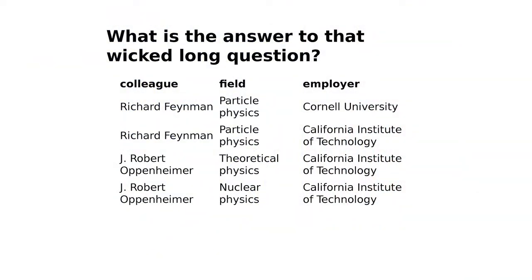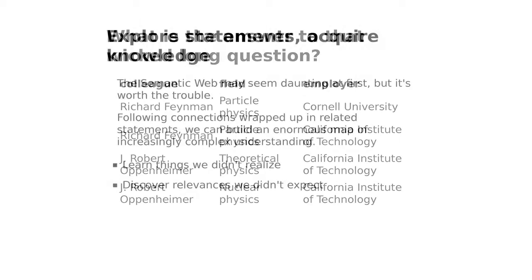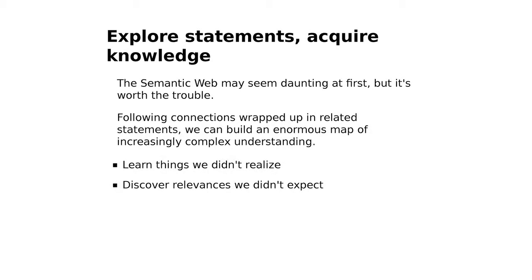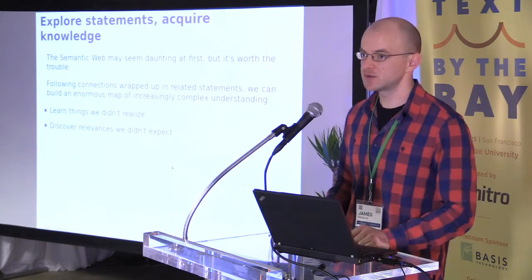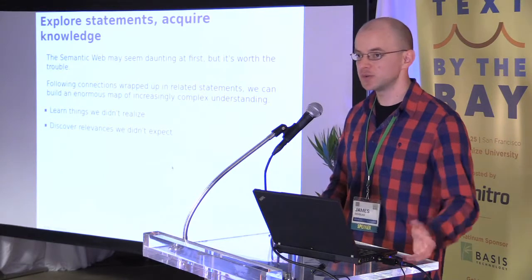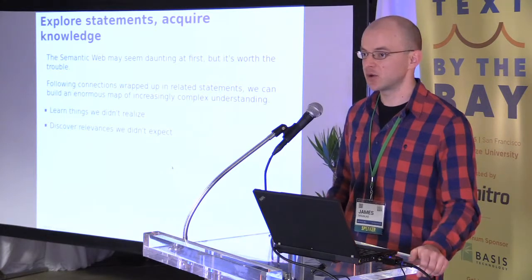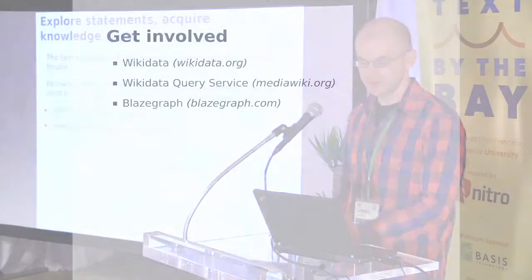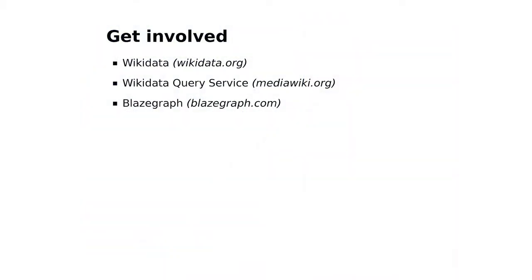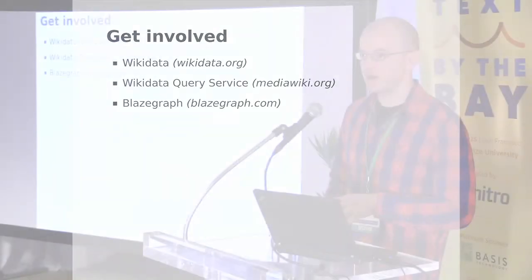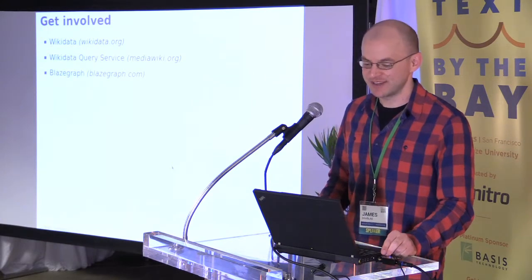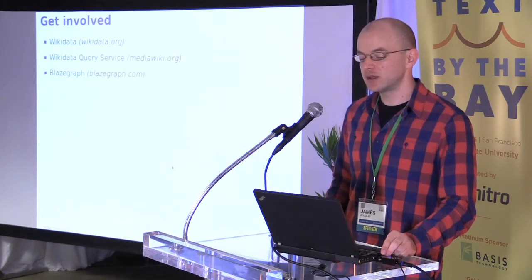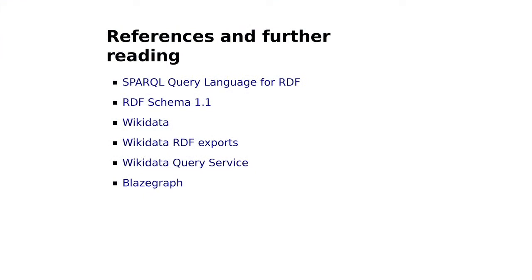Running this on Wikidata, we get some results. The point of all of this is that Semantic Web is super daunting and there's a lot to learn, but I think it's worth the trouble. Being able to traverse these graphs of data and build up knowledge from synthesizing those pieces of information is super powerful. We can learn things we didn't anticipate, discover relevances between things we didn't know were there — like, oh, Richard Feynman is connected to Oppenheimer. If you want to get involved, you can go to Wikidata to improve the data. It's built on MediaWiki, which powers Wikipedia, and it also feeds Wikipedia. The query service we're building is built on BlazeGraph.